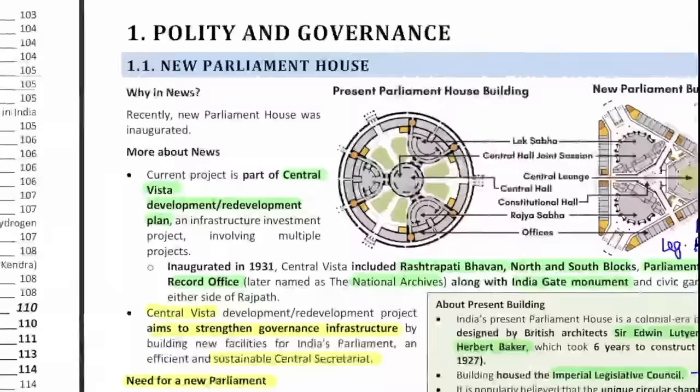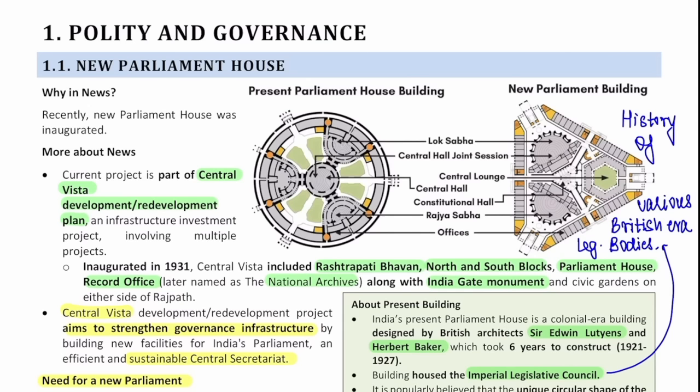So the first article in polity is the new parliament house. Before I start teaching, one more thing I want you to understand — this theme will be constant throughout this lecture and future lectures. Everything highlighted in green means it is relevant for prelims. If something has been highlighted in yellow, it means it is relevant for the mains examination. Please keep this in mind as we go forward.